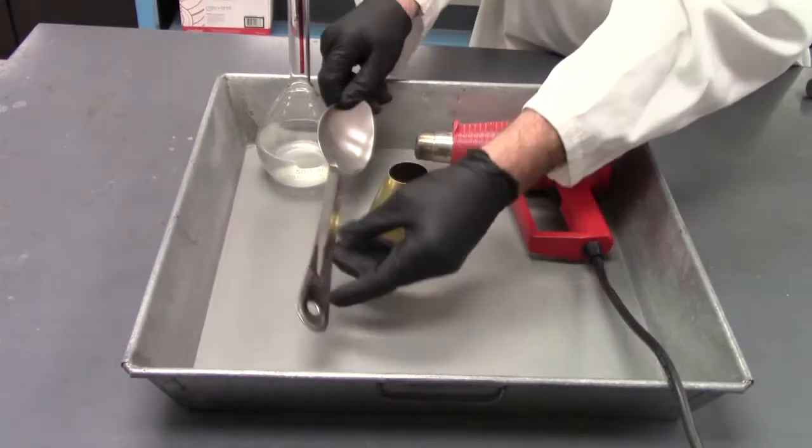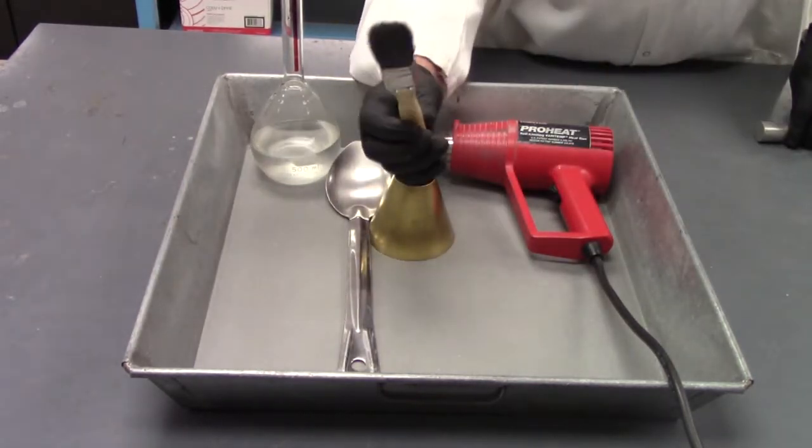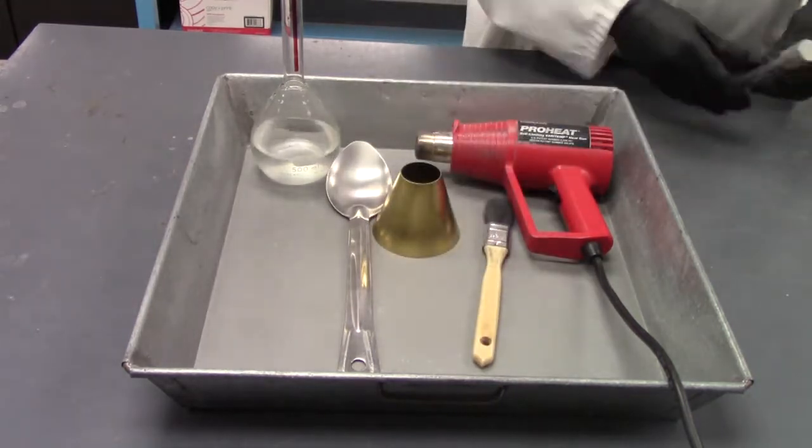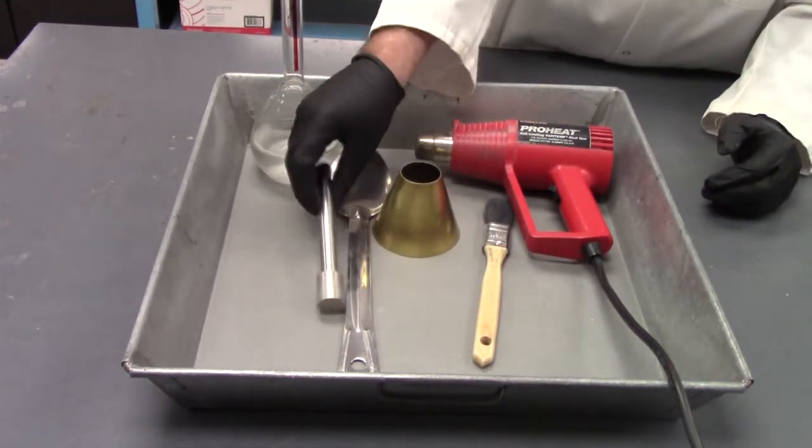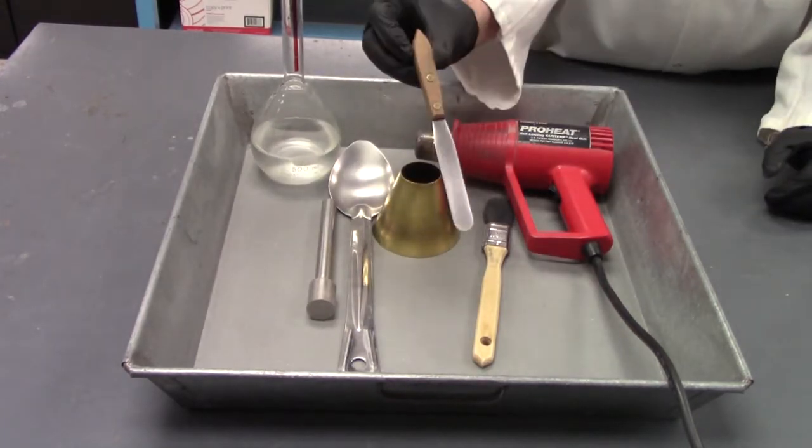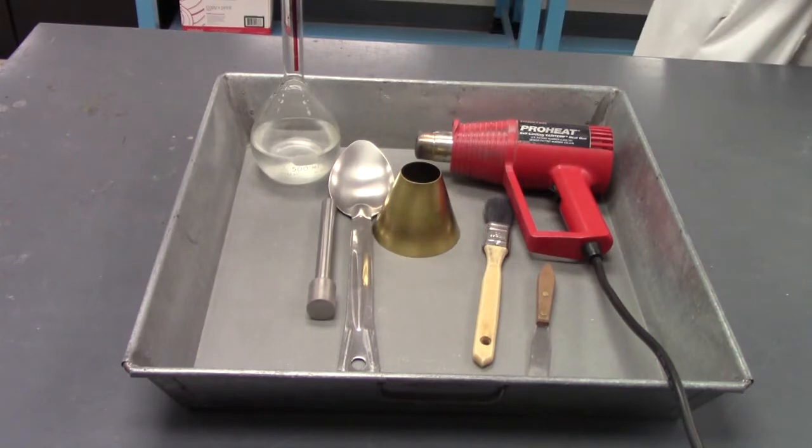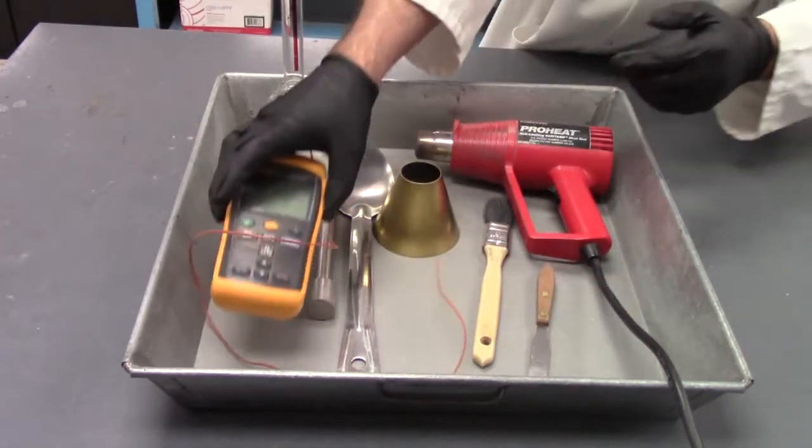You'll need a spoon to help stir your sample while you're drying it, a brush to help reconsolidate your sample, a tamper to tamp your sample, a spatula, and of course a thermometer to detect the temperature of your water.